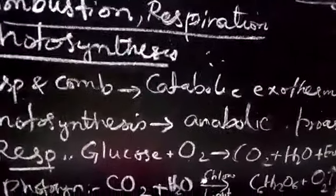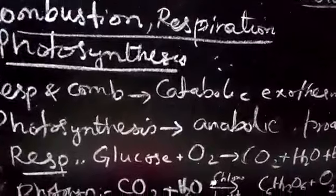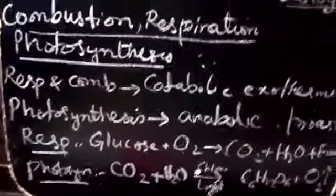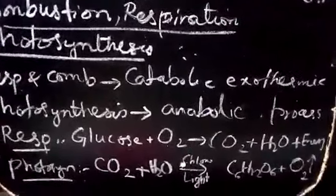Respiration and combustion are catabolic processes. But as far as photosynthesis is concerned, it is an anabolic process. We can say it is a constructive process in which plants manufacture their food with the help of different raw materials.